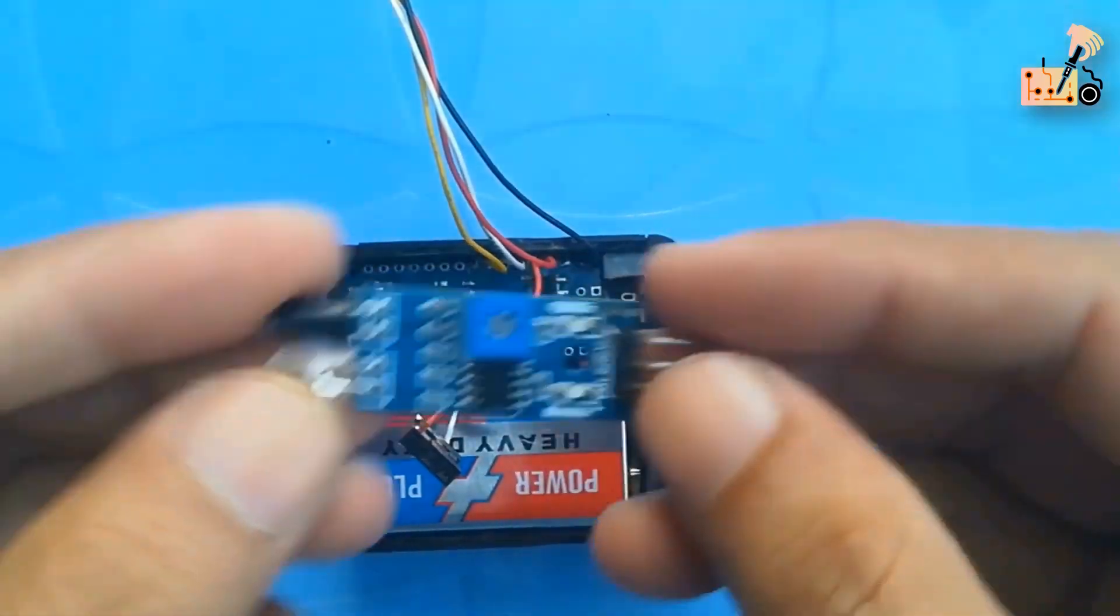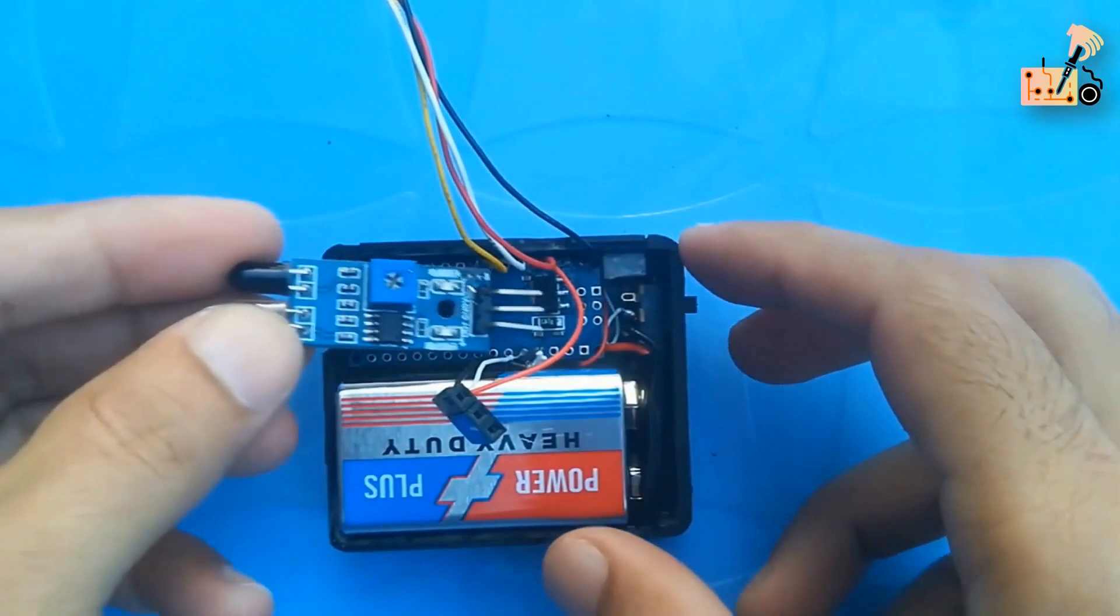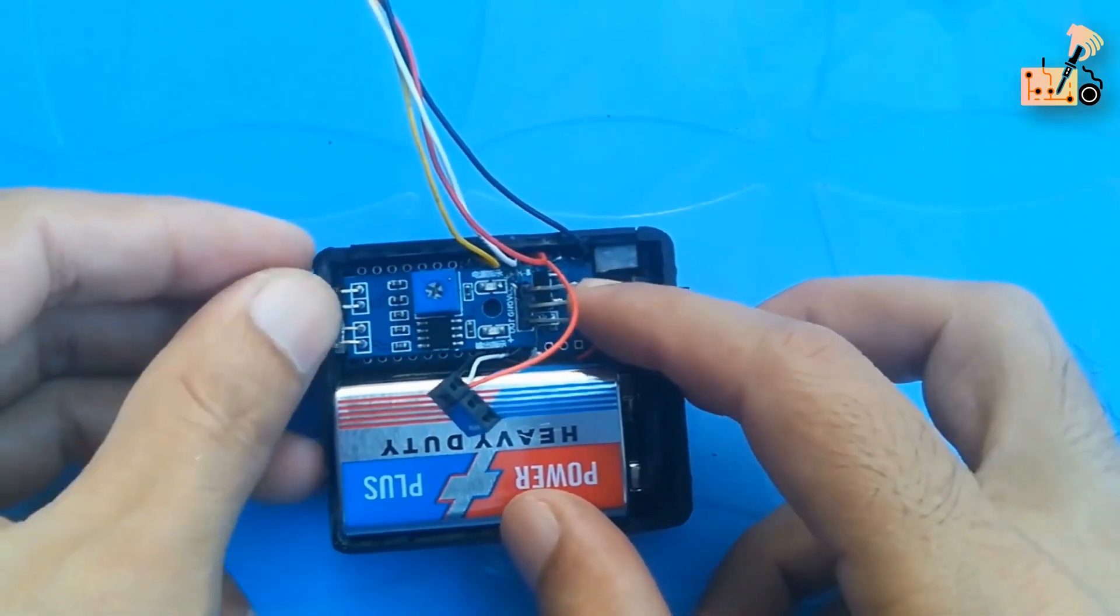Complete the setup. Install the IR module and display module then box up the casing for a finished project.